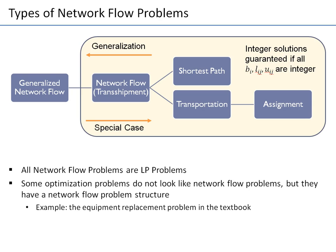Let's summarize the network flow problems we've talked about so far and introduce one more type in this chapter called the generalized network flow problem. So far we talked about network flow problems and distinguished transshipment, shortest path, transportation, and assignment. Transshipment is just another name for a network flow problem — any network flow can be called a transshipment problem.